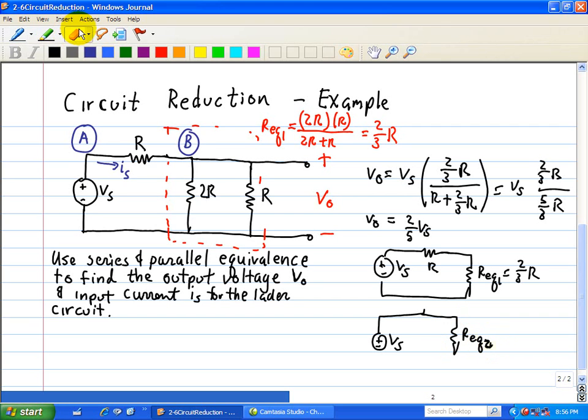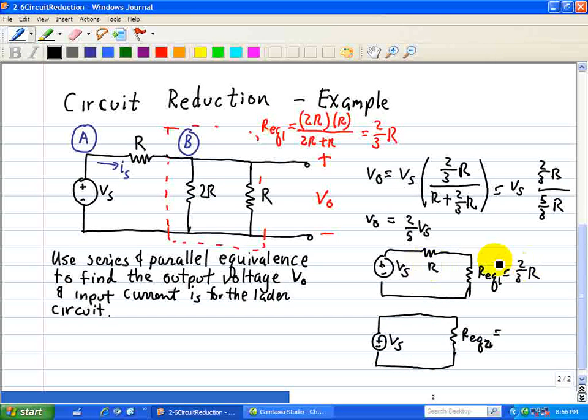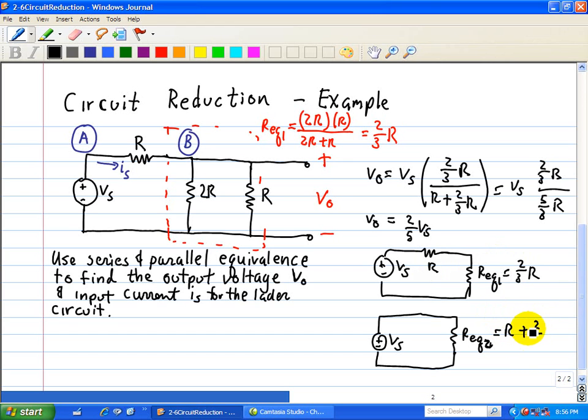Let me clean this up a little bit, let me go back here and draw this circuit. So R equivalent 2 is just add these two resistors, which is just R plus two-thirds R or five-thirds R. So that's R equivalent 2.